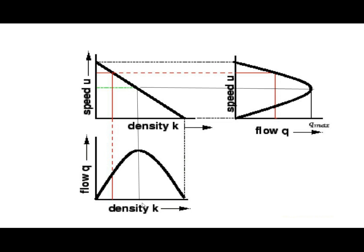This shows the relationship between the three parameters — speed, density and flow — on the same scale. The flow-density relationship is parabolic, speed-density is a linear correlation, and speed-flow is again parabolic. From these diagrams, at any density you can find the flow or the speed, or at a given speed you can find the corresponding flow.